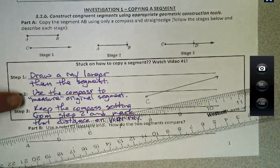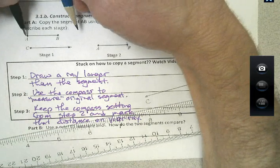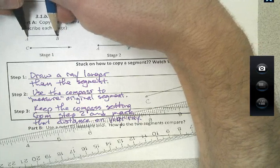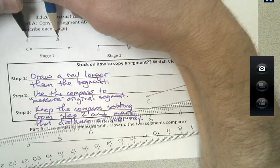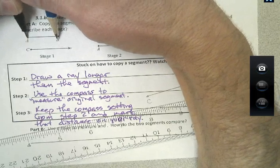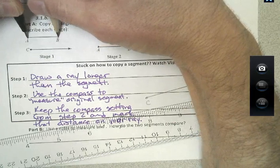Step 2, we're going to use the compass to measure the original segment. So I'm going to come up here and put the point on A and close my compass until it lands on B. Then I'll just make a little swipe here to make sure it goes through there. Maybe make it a little bit longer. Okay, so that's good.